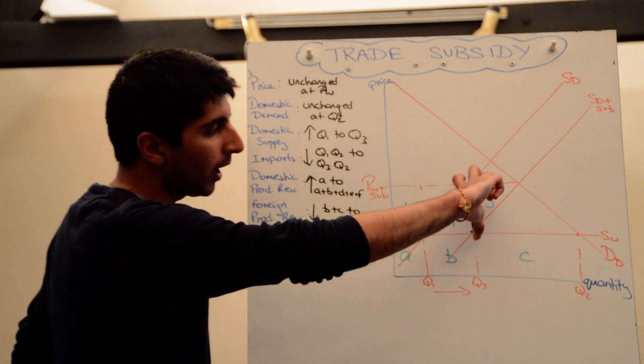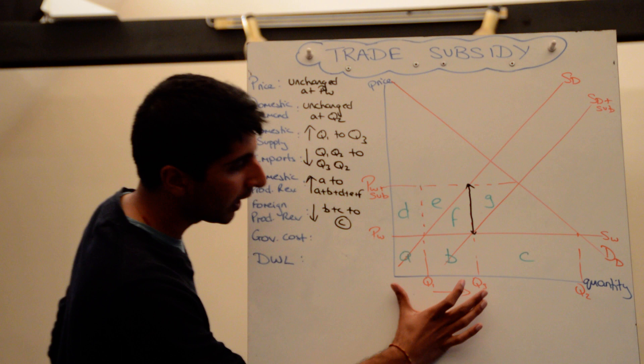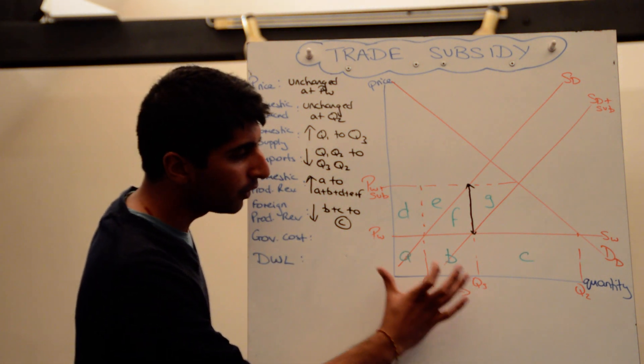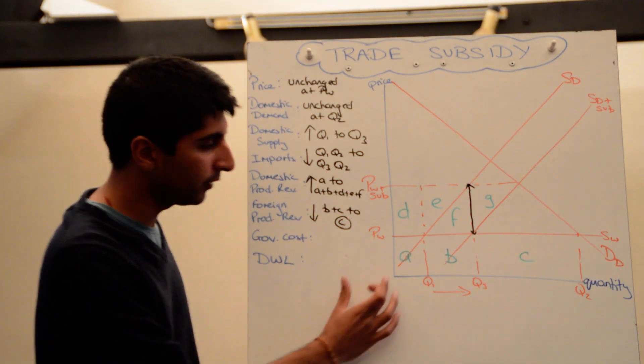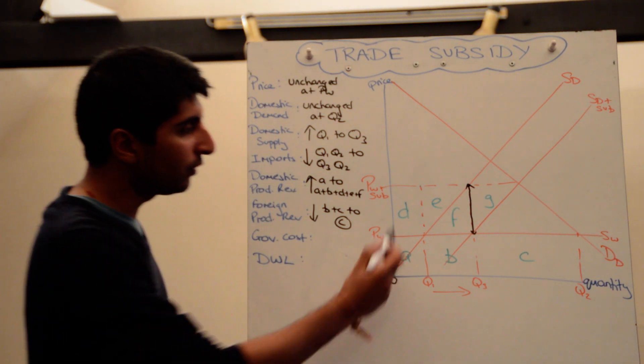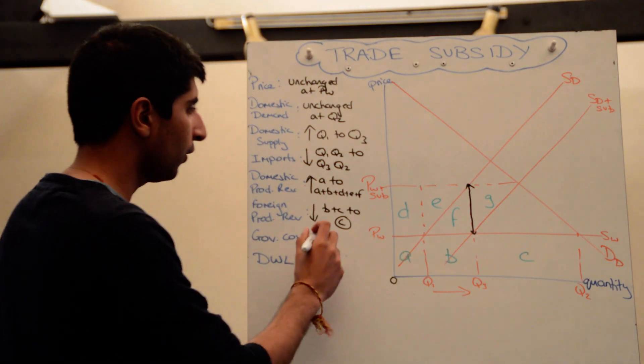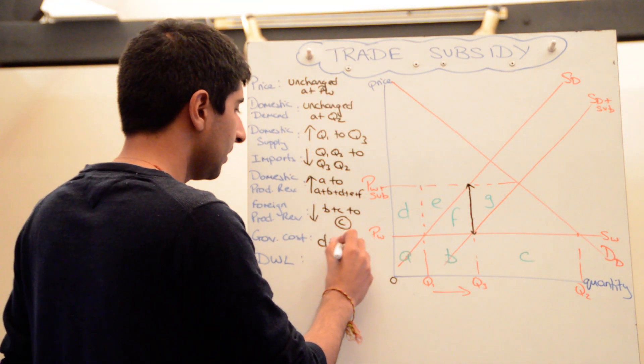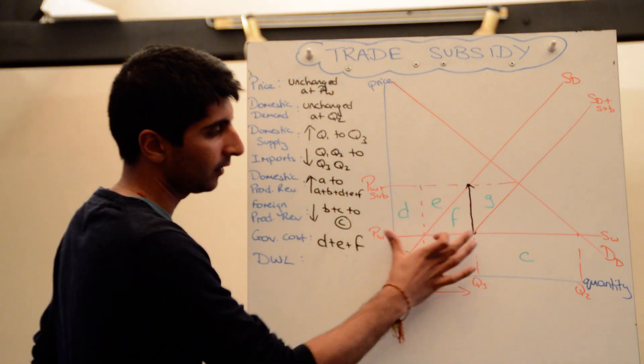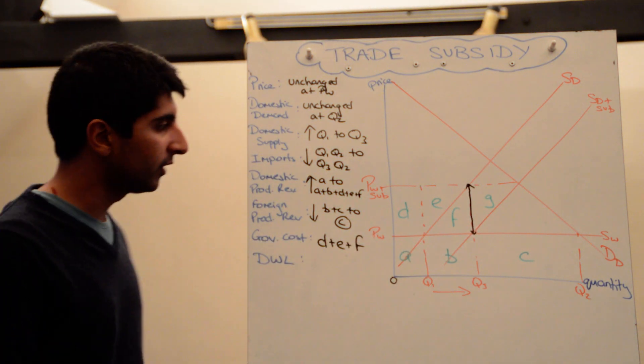You times that vertical distance by the quantity being produced by domestic suppliers, so between if you want to call it naught and q3, and that gives you the box of d e and f. So the cost to the government is d plus e plus f - vertical distance times that quantity value on the x-axis there.